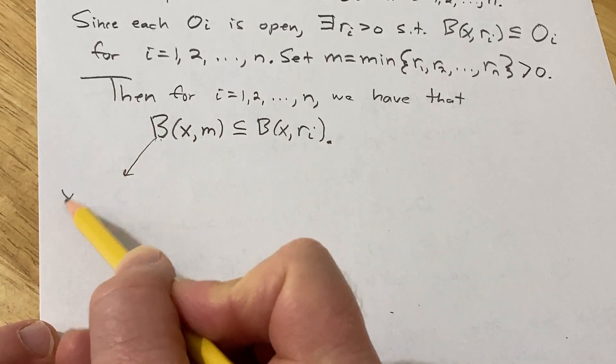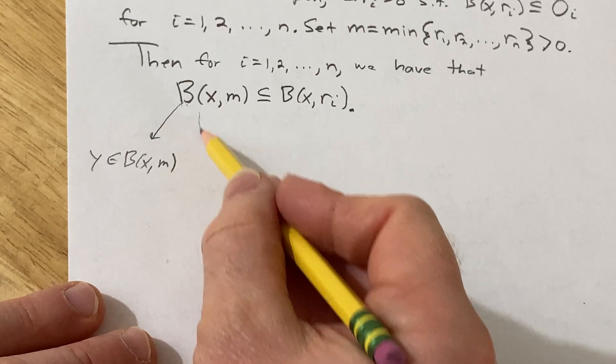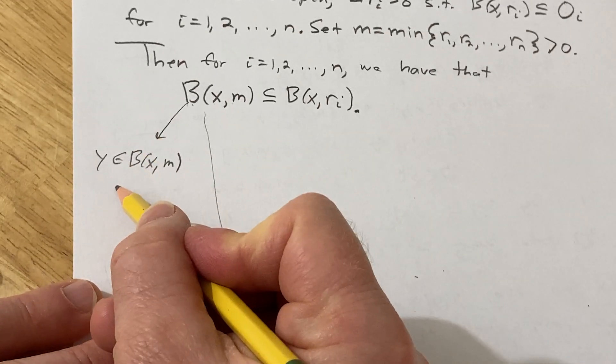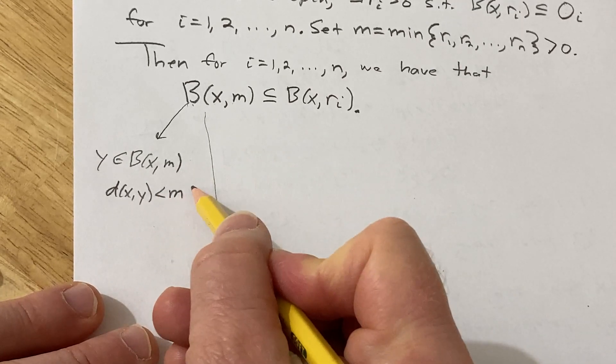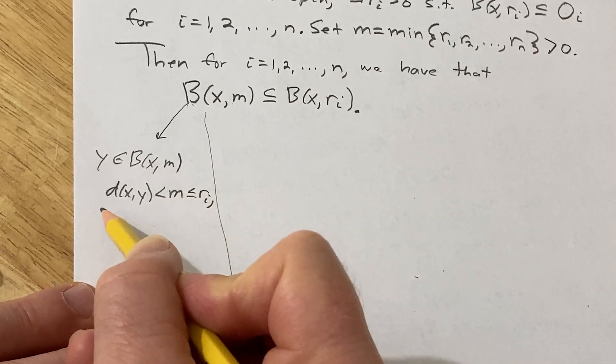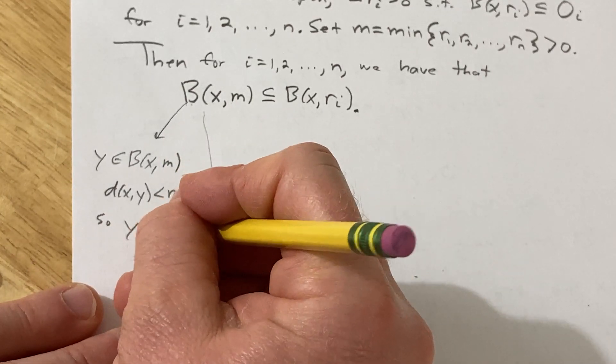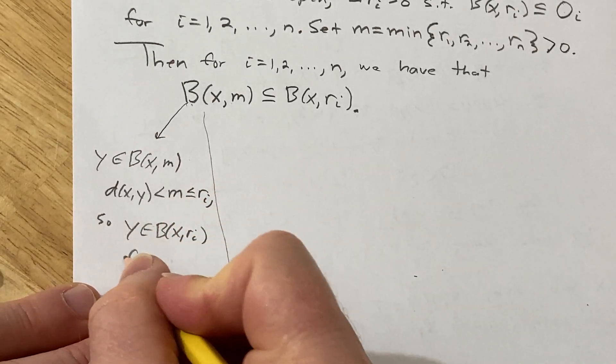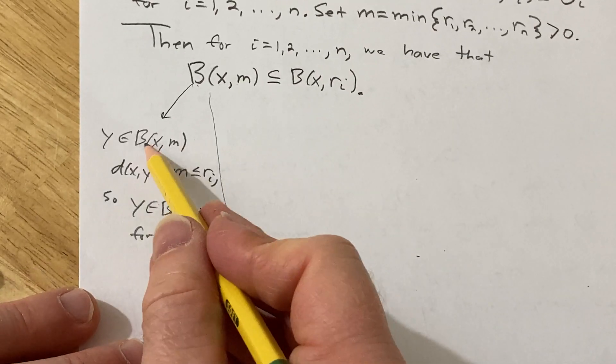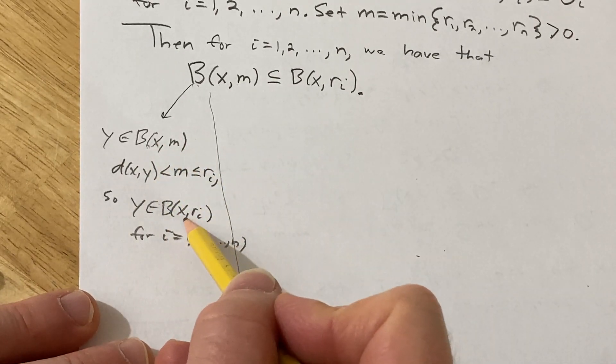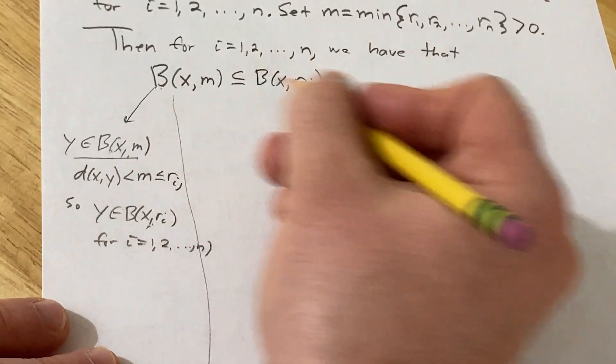But let me just show you if you were to take y in this set here—it's not part of the proof just to explain this—that would mean that d(x,y) is less than m. But m is the minimum so it's less than or equal to rᵢ. So that means that y is in this set for each i. So for every y in this set is in every single one of these sets. So this set is a subset of every single one of these sets. And that's what we're saying here.